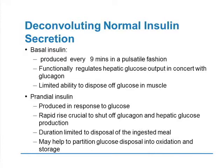Prandial insulin — the insulin you produce with meals — has a completely different effect. It is produced in response to glucose. The rapid rise, that first phase, is crucial to shut off glucagon and thereby completely shut off hepatic glucose production. The duration must be limited to the extent of the meal; you cannot have it functioning afterwards, otherwise you get hypoglycemia. That prandial insulin is how you partition how much of the meal you're going to oxidize for energy and how much you're going to store for later use.